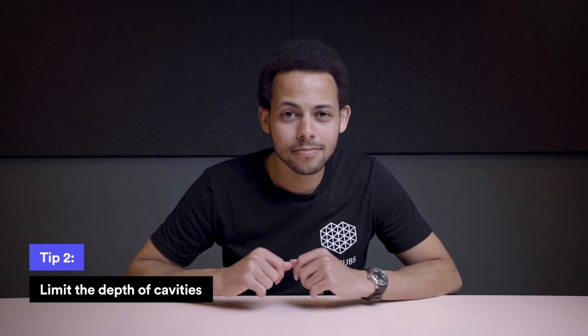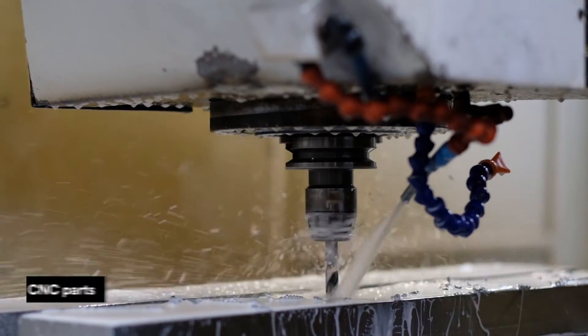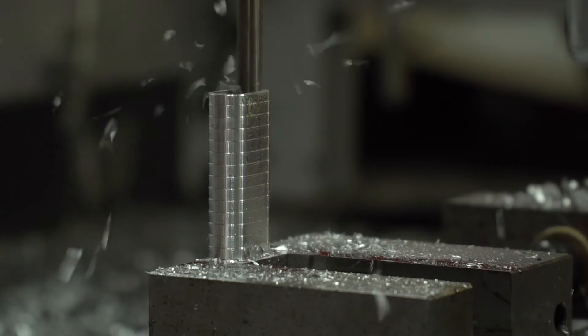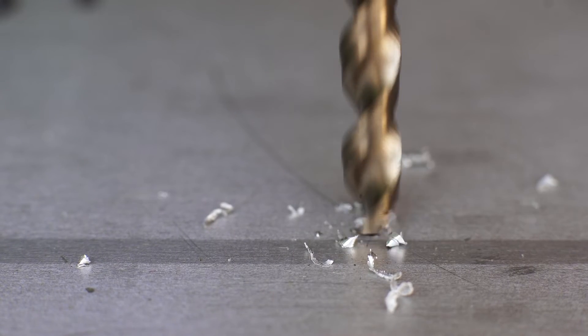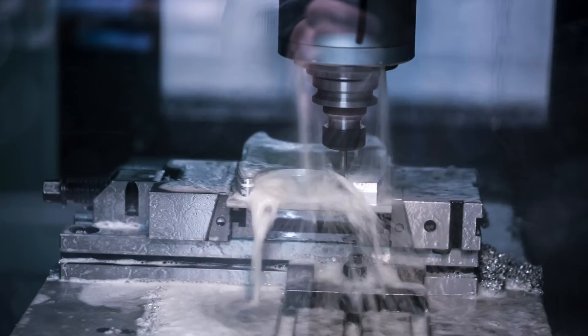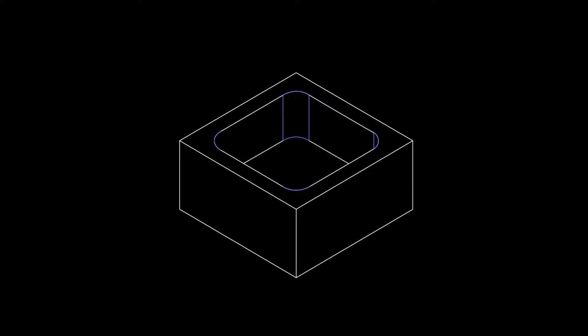Tip number two: limit the depth of cavities. Machining deep cavities affects the cost of CNC parts drastically — a lot of material needs to be removed, which is very time consuming, and special tools might be required. CNC tools have a limited cutting length and work best when cutting cavities with a depth of two to three times their diameter. Cutting deeper cavities is possible but increases cost, as special tooling or multi-axis CNC systems are required. To minimize costs, always limit the depth of all cavities to four times their width.